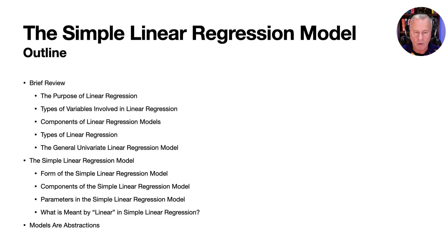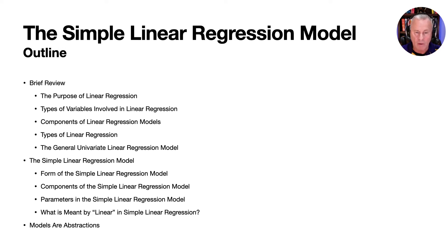We'll then look at the general univariate linear regression model. From there, we'll specialize and start looking at the simple linear regression model — its form, its components, and identify the parameters in it. We'll also look at what is meant by the word 'linear' in the name simple linear regression, and then talk about the fact that all models are abstractions.